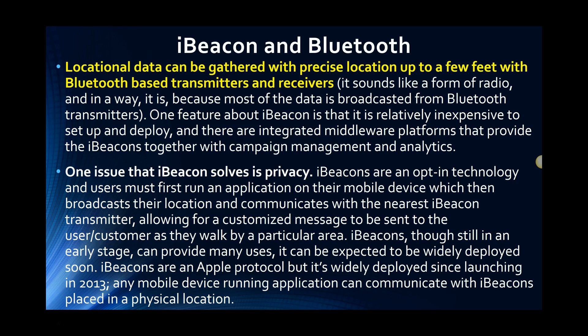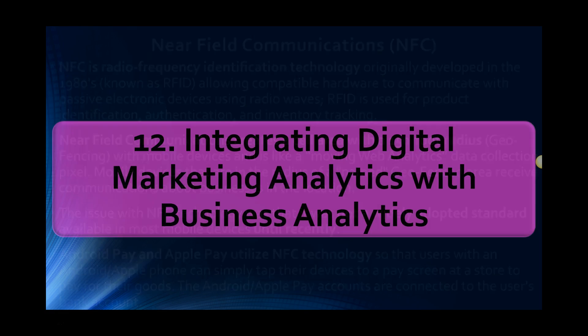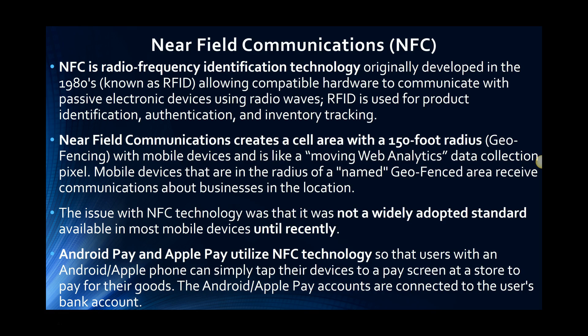Locational data can be incredibly precise — GPS can be up to 20 feet, iBeacons up to a couple of feet. Near field communications, which never fully took off, can create bubbles of 150 feet to send messages to. iBeacons became very popular. I don't really have an assessment for this aspect because I just didn't find a good one, so I won't say I closed the circle on everything. We did as much as we could humanly do, but this is a field so gigantically important that there's no way to totally cover everything.